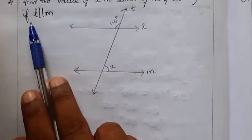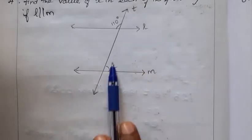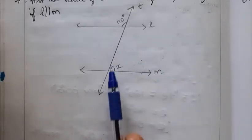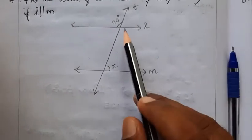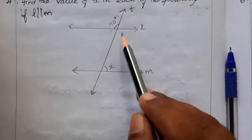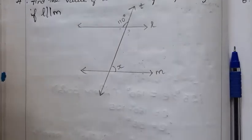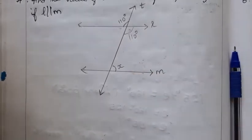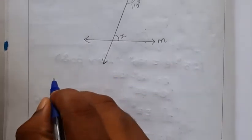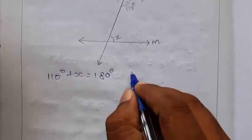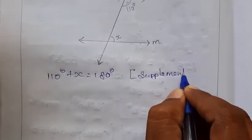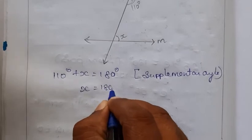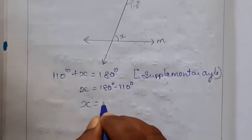Next problem: Find the value of X if L is parallel to M. The two lines are parallel and T is the transversal. The given angles — 110 degrees and X — are interior angles on the same side, so they are supplementary. Therefore 110 plus X equals 180, so X equals 70 degrees.